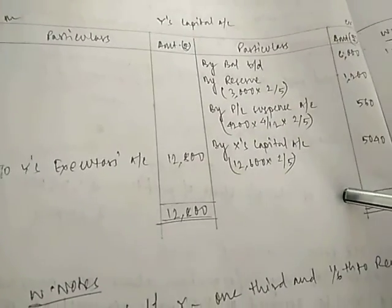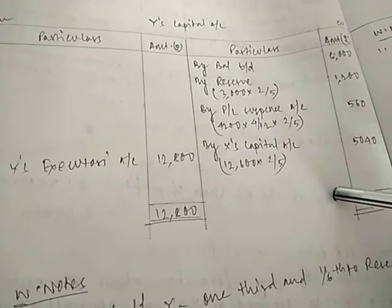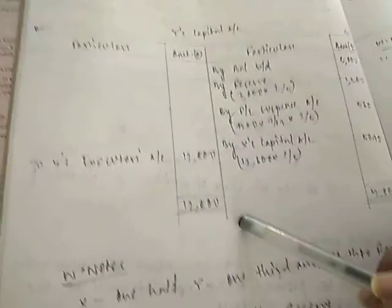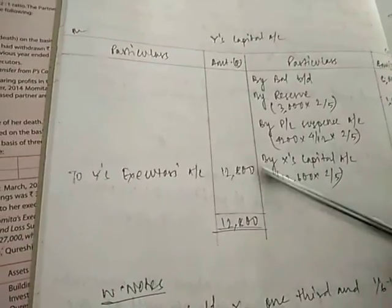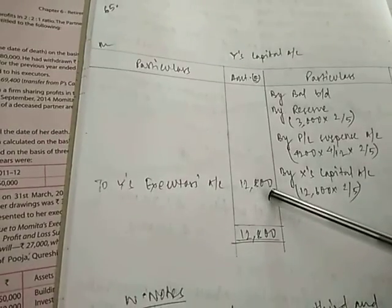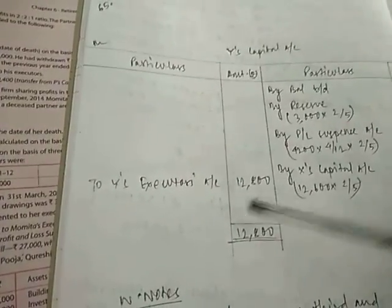So by X capital 5,040 is provided as well as PL suspense. The share of profit of Y is also provided in this manner. You can see in this question we have provided all the required information according to the question. We have provided everything here. So we will add, it comes to 12,800. The same total will copy on the other side and when we balance you will get 12,800. So Y the executor's account will be entitled to Rs. 12,800.